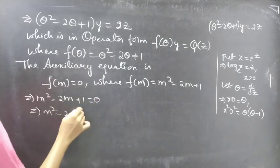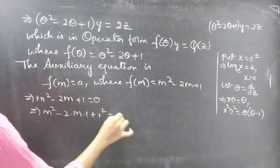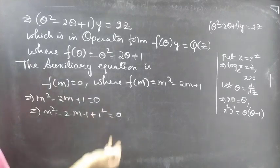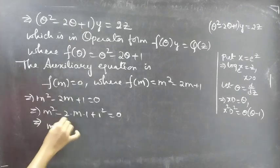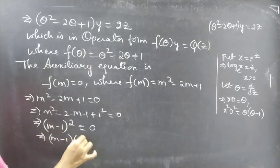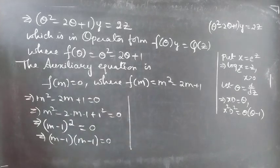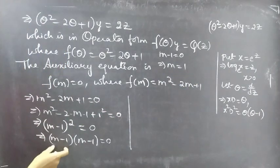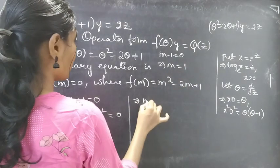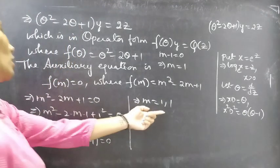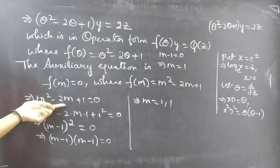We can write 2m as 2 times m times 1, and 1 as 1 squared, so this is in the form a squared minus 2ab plus b squared, which is the expansion of (a minus b) squared. Therefore we can write it as (m minus 1) whole squared, which equals (m minus 1)(m minus 1). Equating each factor to zero: m minus 1 equals 0 gives m equals 1. Since m minus 1 repeats twice, we get m equals 1, 1 — that is, real and equal roots.